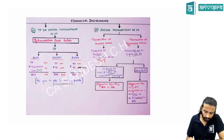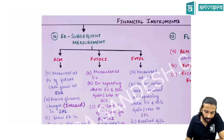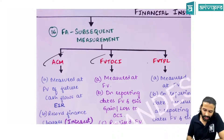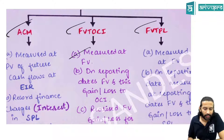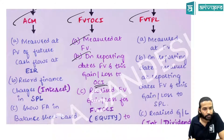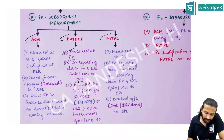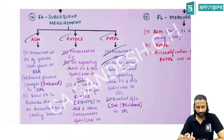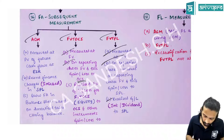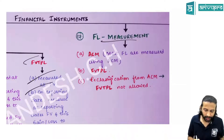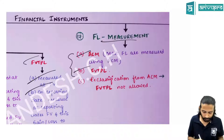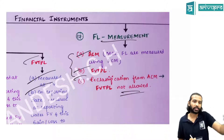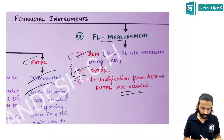Subsequent measurement: ACM uses the effective interest rate; FVTOCI — fair value changes go to OCI; FVTPL — all gains and losses, realized or unrealized, go to P&L. For financial liabilities, there are only two categories: ACM and FVTPL. Reclassification for financial liabilities is not permitted — only financial assets can be reclassified.